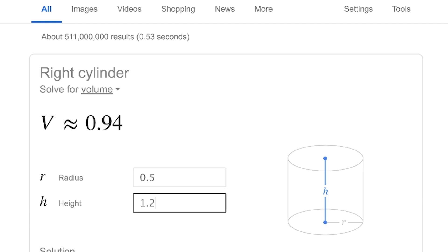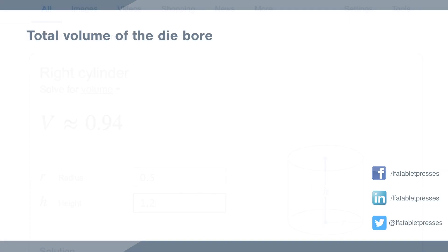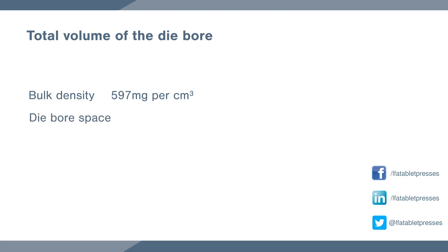0.94 centimetres cubed is our maximum space inside our die. Now we take our bulk density from earlier and multiply it by our maximum die space. Our bulk density is 0.597, which is 597 milligrams per centimetre cubed, and our die space is 0.94, so 597 times 0.94 equals 561.18 milligrams.